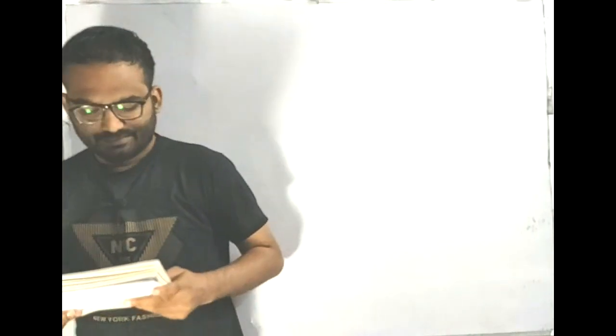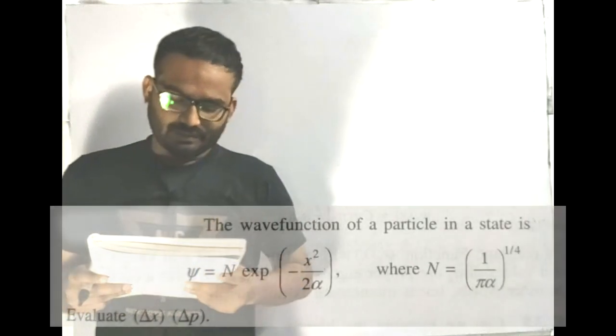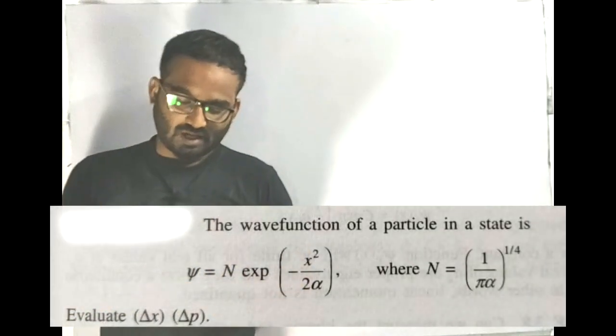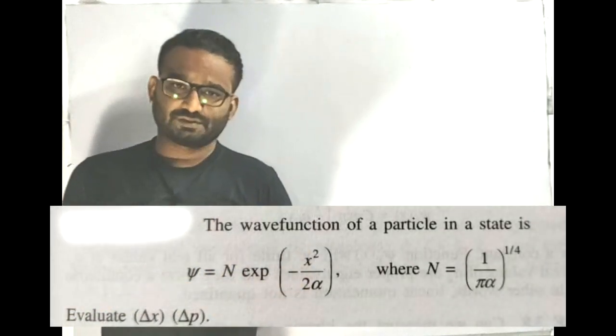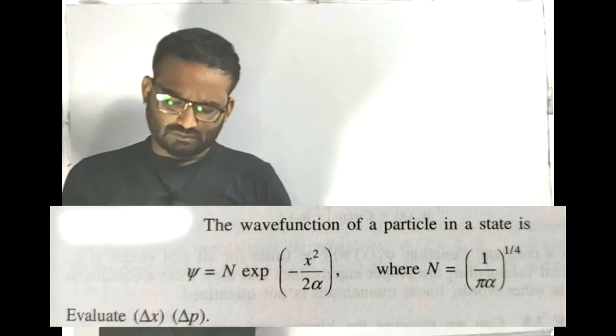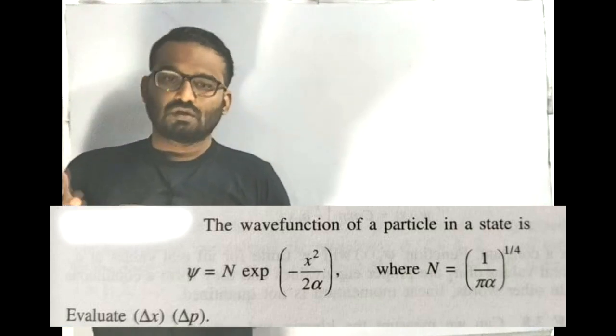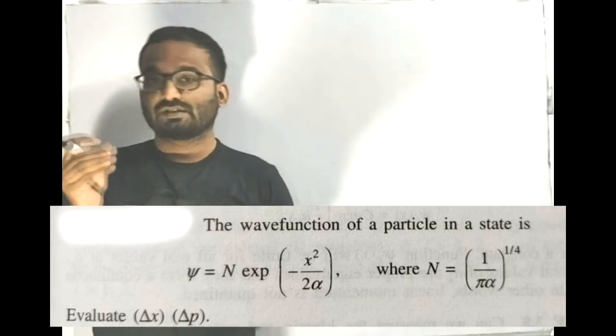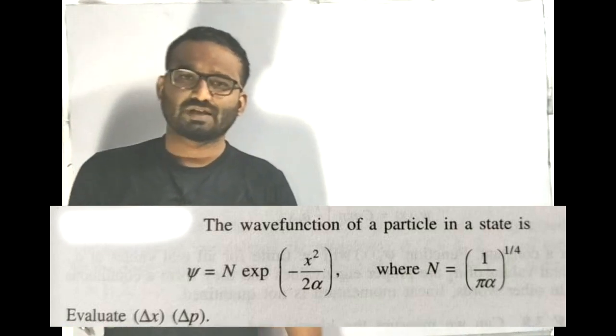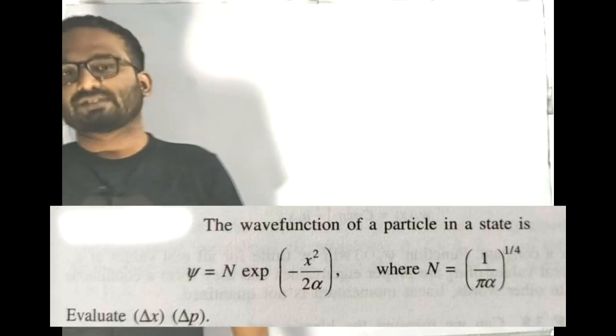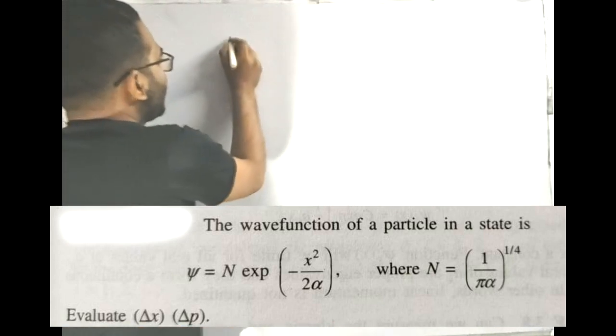In this video we are going to discuss a problem from quantum mechanics. This type of problem is very important for your exam, so it will definitely help you. The question reads: the wave function of a particle in a state is psi equals N times exponential minus x squared by 2 alpha, where N equals 1 by pi alpha to the 1/4. Evaluate delta x and delta p, which represent the uncertainties.